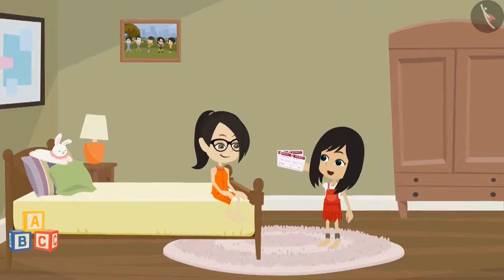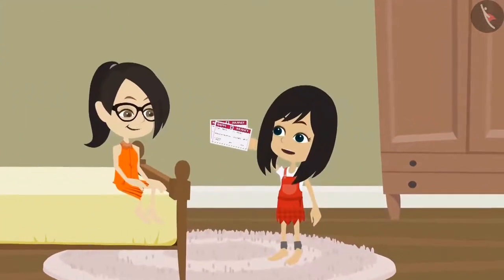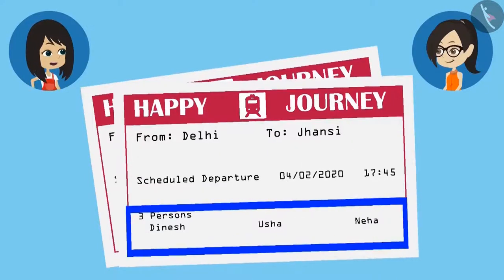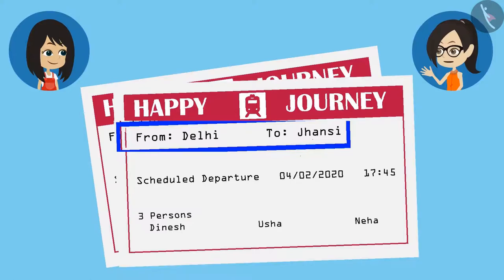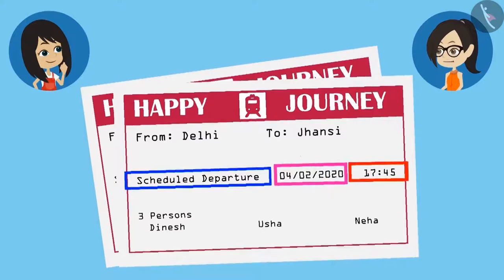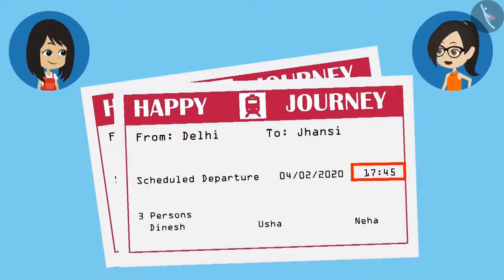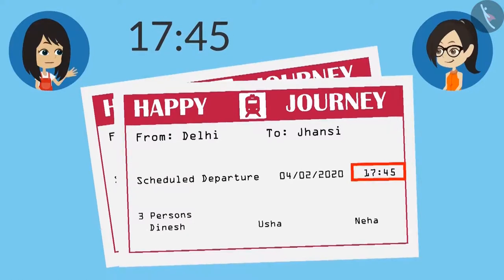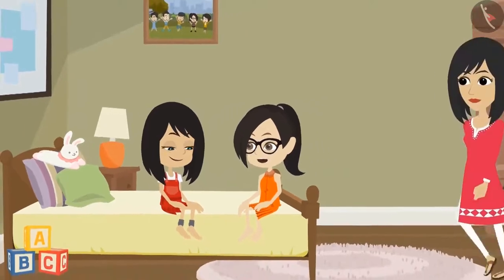Here are the tickets — one to go to Jhansi and one to come back from there. Let's see what all are mentioned on the ticket. Look, it has Mummy, Papa's and my name written on it. It is also written that this train will go from Delhi to Jhansi. And what is this written? Scheduled departure. What is the meaning of this? I don't know. But the date is written in front of it, and something else is written as time but it is not time — time must be written in the format of time. The time is written as 45 minutes past 17. Yes, and AM or PM is also not written along with it.